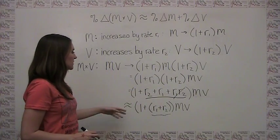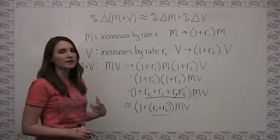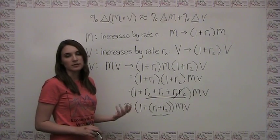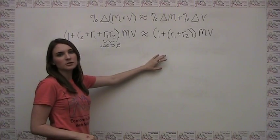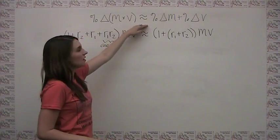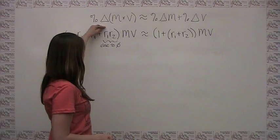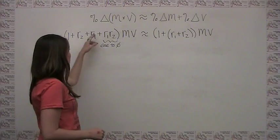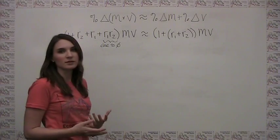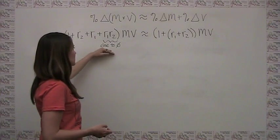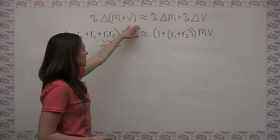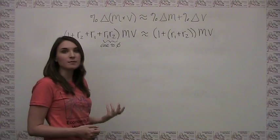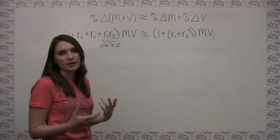It's important to think about when we can drop this r1 times r2 term without much effect. Mathematically, this term becomes very small when r1 and r2 are themselves small. In general, it's pretty reasonable to make this approximation when talking about the quantity theory of money, because typically the percent changes in the money supply and the velocity of money are very small, so r1 times r2 will be very close to zero and won't affect our answers much.